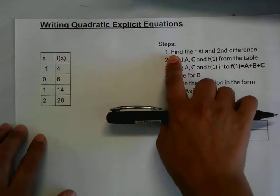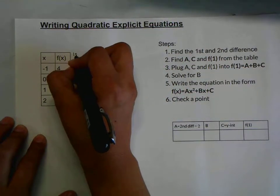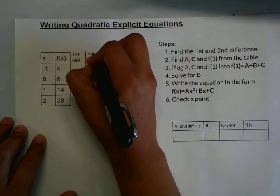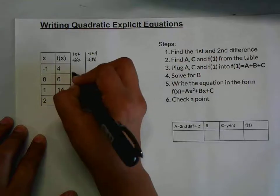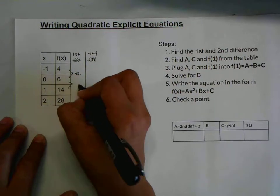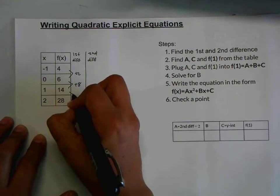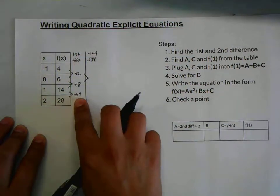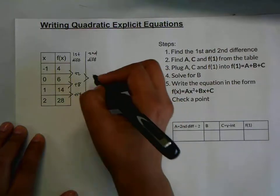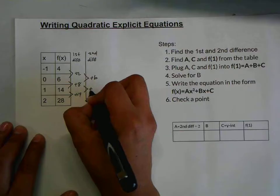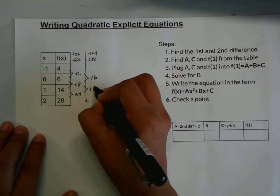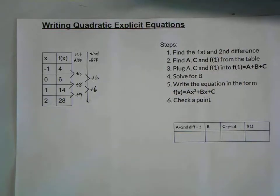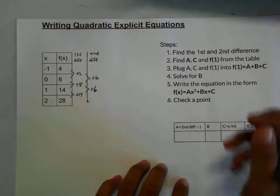The first step is to find the first and second differences. I'm going to do that quickly here. From 4 to 6, adding 2, adding 8. Second difference. As you can see, this is linear. It's at a constant rate, so it can't be a linear function. And for a quadratic function, the second difference will be constant. So our first step is done. Check.